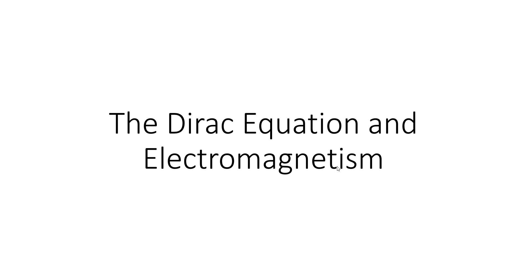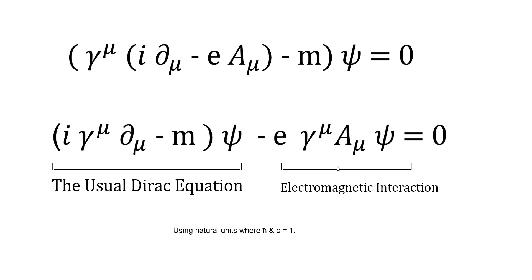Hello. I'll be talking about the Dirac equation, how it relates to electricity and magnetism. We know that the Dirac equation is given by the usual i gamma mu d mu minus m psi, but if we add an electromagnetic interaction such as minus e gamma mu a mu psi equals zero, then we can find how the energies change. It's no longer a free particle.